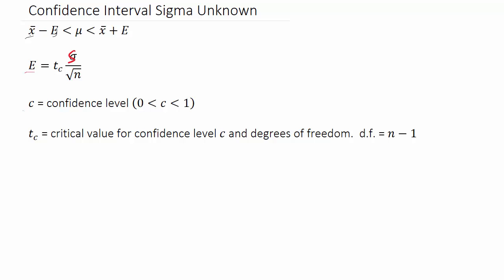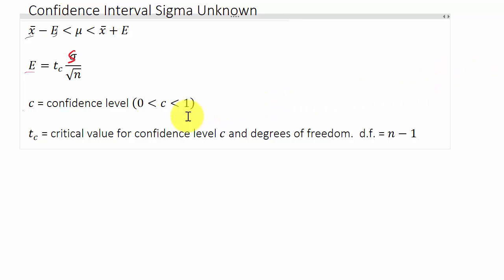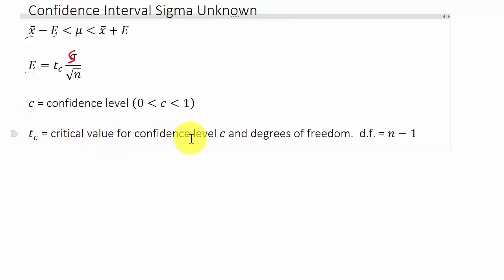Let's look at confidence intervals. In this video we're going to do a confidence interval where sigma is unknown, and we're going to do it in Excel. The confidence interval is X-bar minus E less than mu less than X-bar plus E. E is equal to T-sub-C times S over the square root of N, where S is the sample standard deviation, C is the confidence level, T-sub-C is the critical value for confidence level C, and degrees of freedom is N minus 1.